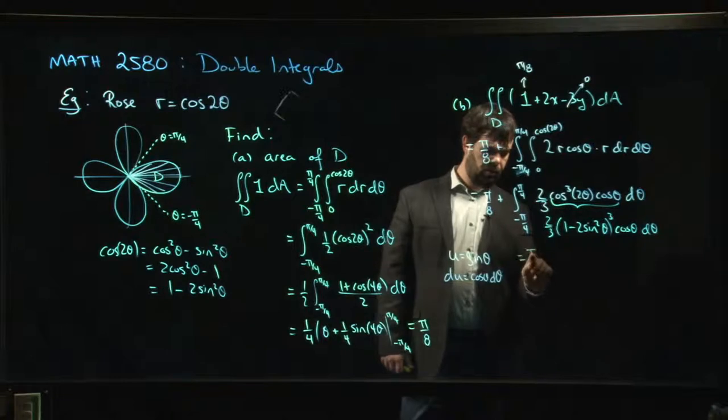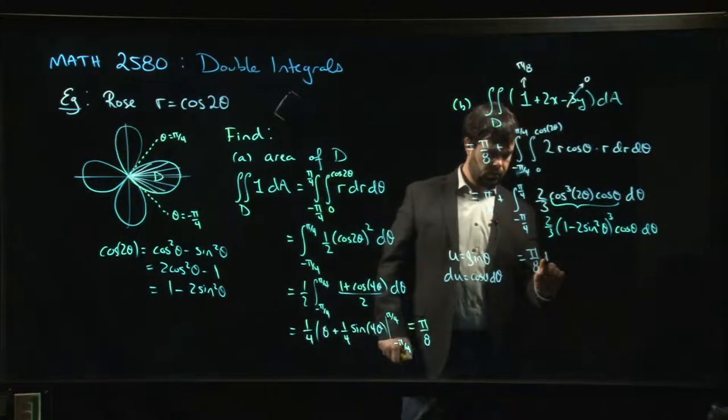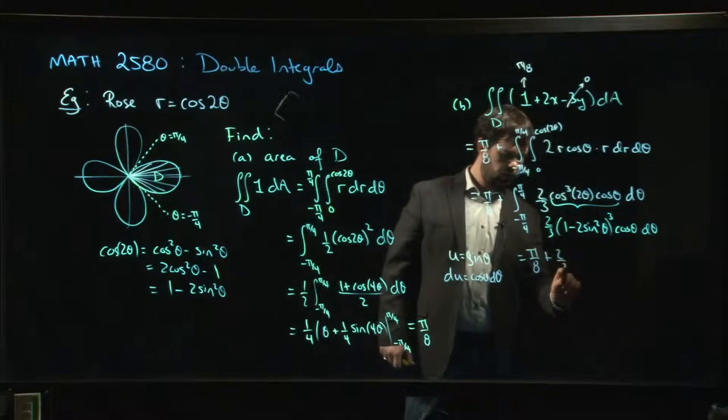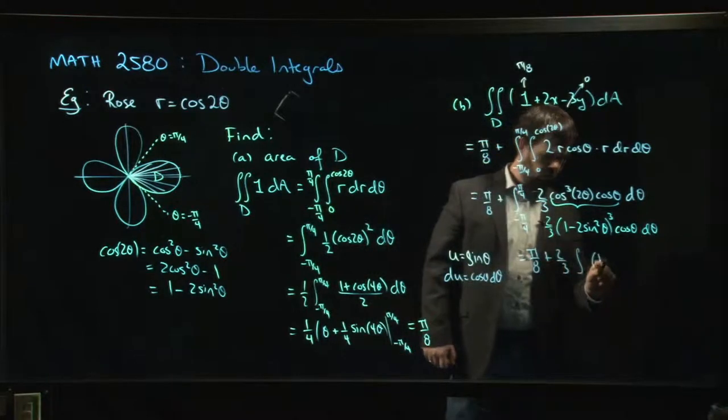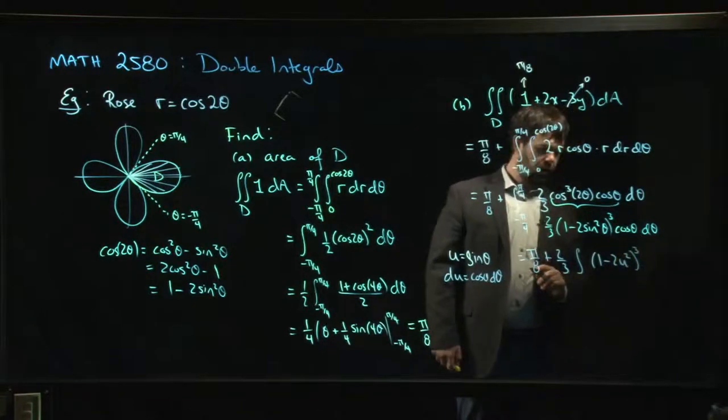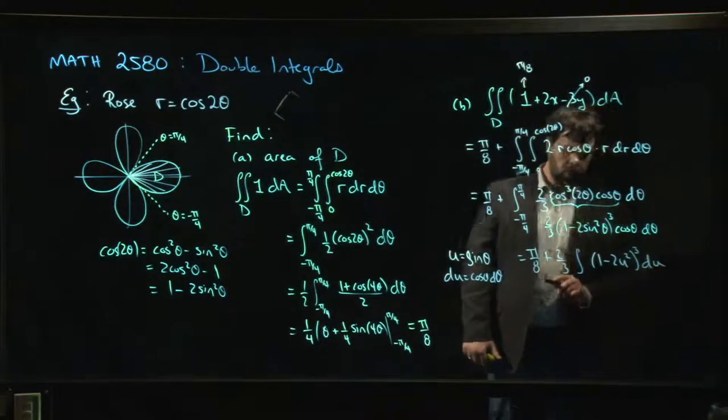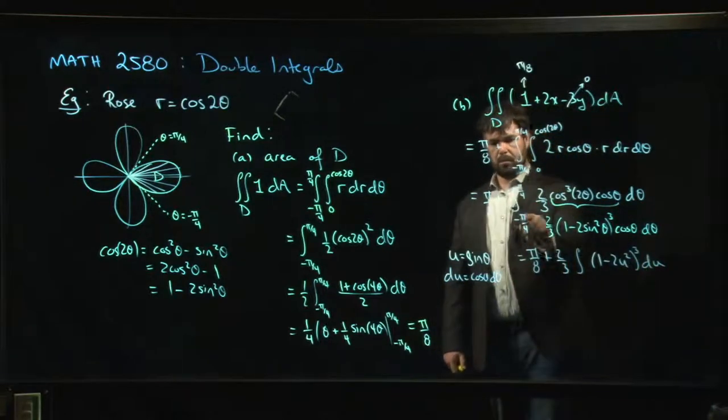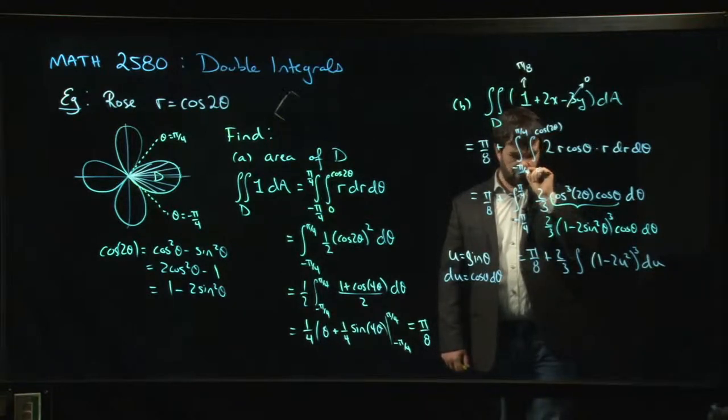So what you're going to get is, well, we still have that pi over 8 along for the ride from this part. 2/3 out front. We're going to have 1 minus 2u squared, and then cubed du, minus pi over 4 to pi over 4.